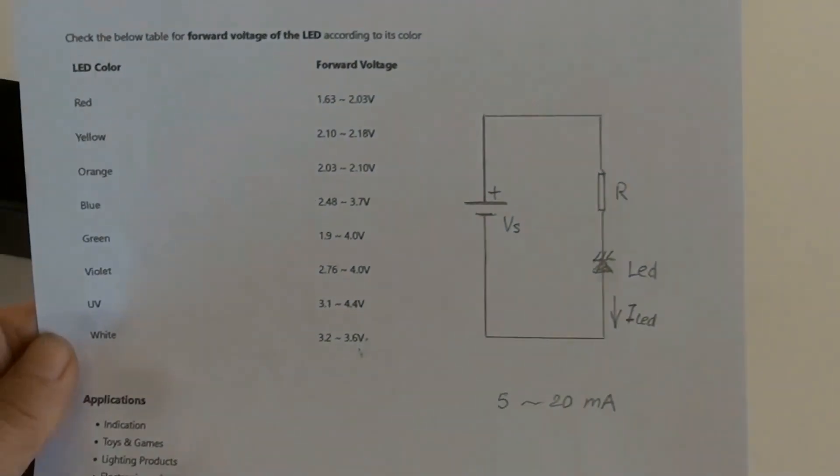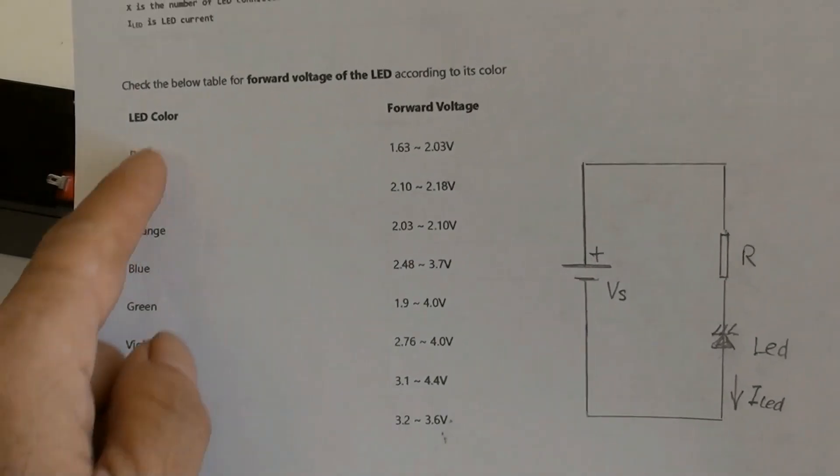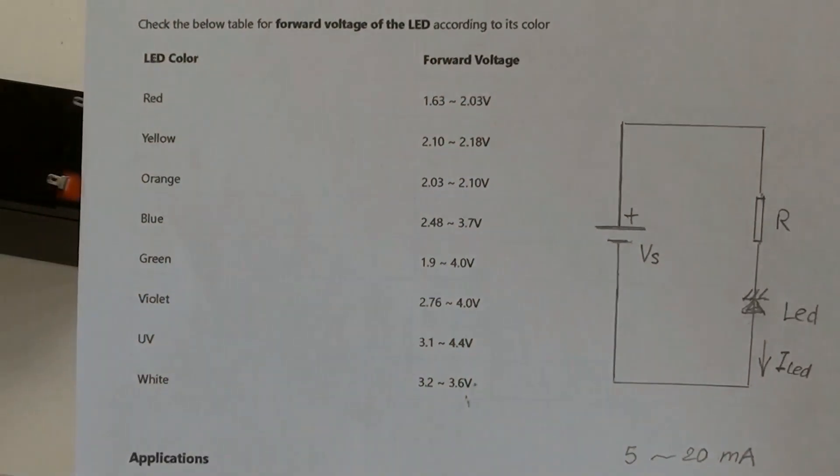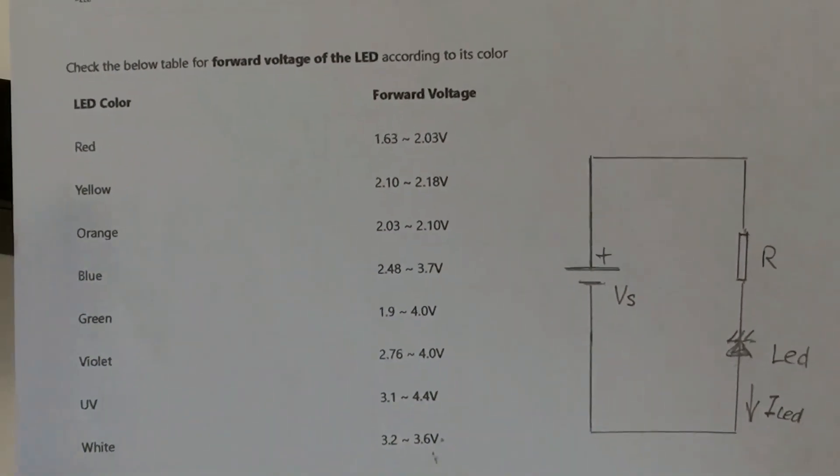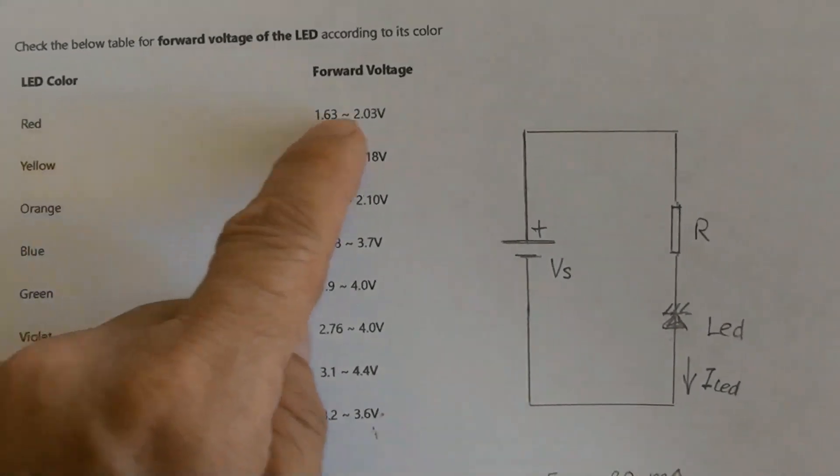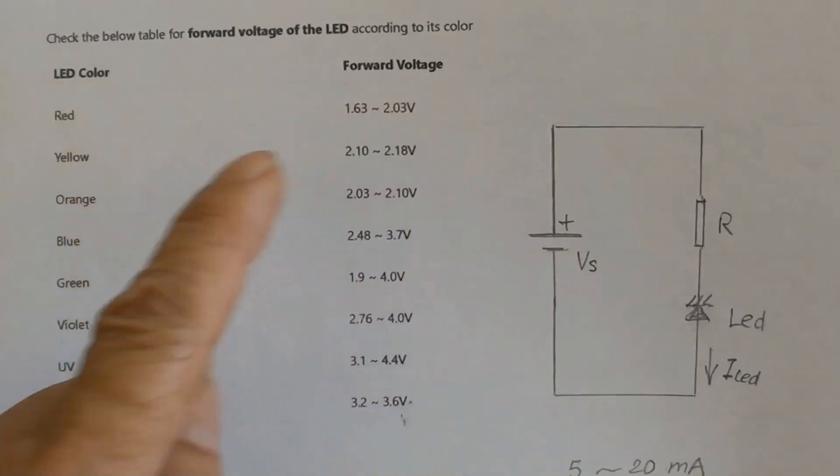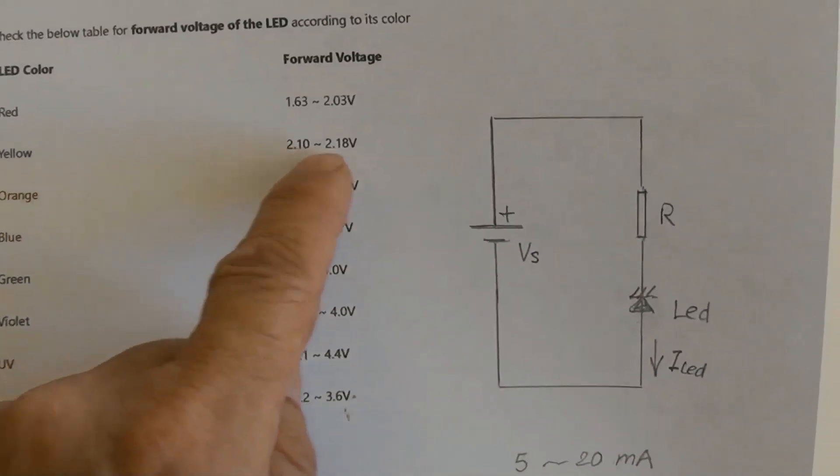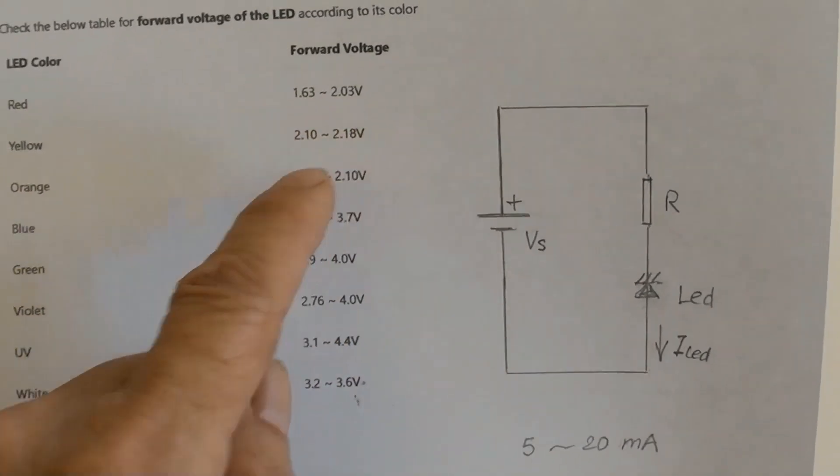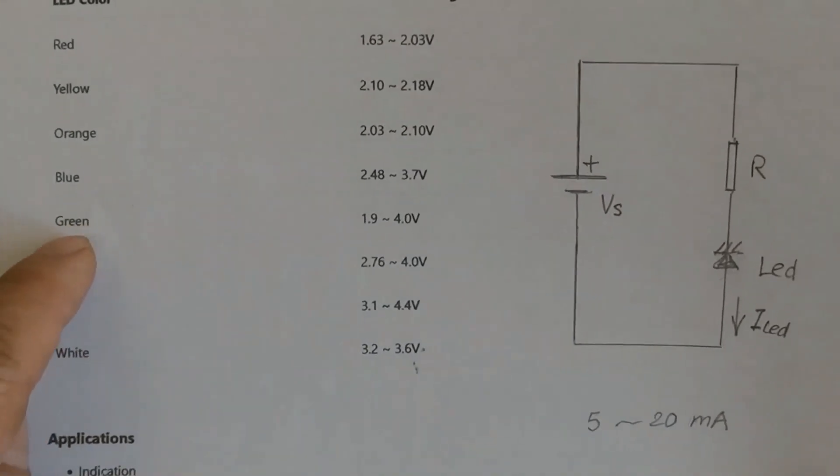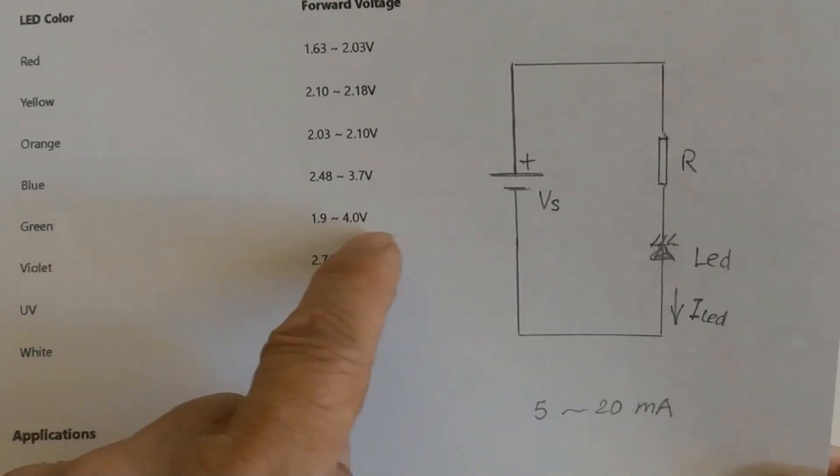The voltage value of an LED can be found from its data sheet, and the details here are general indication only. Red LED voltage value is 1.63 to 2.03 volt, for example yellow LED 2.10 to 2.18 volt, green LED 1.9 to 4.0 volt.